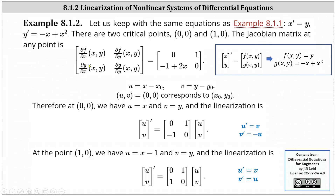Next, we determine the Jacobian matrix. In the first row, we have the partial of f with respect to x and the partial of f with respect to y. The partial of y with respect to x is 0, and the partial of y with respect to y is 1. In the second row, we have the partials of g. The partial of g with respect to x is negative 1 plus 2x, and the partial of g with respect to y is 0.